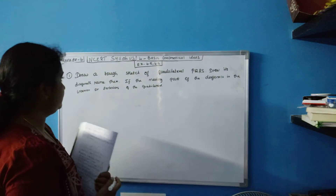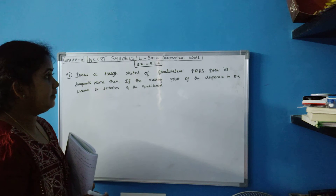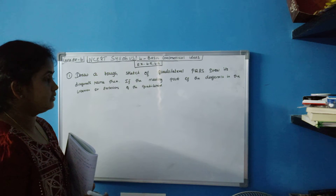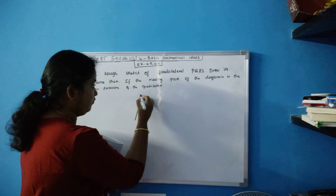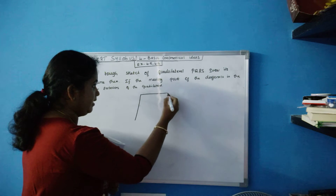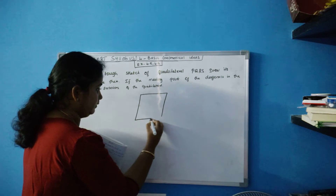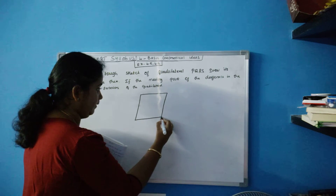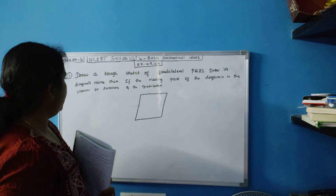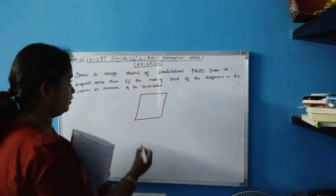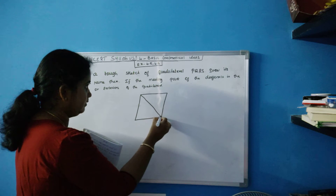So your first question is: draw a rough sketch of quadrilateral PQRS. You have to draw a rough sketch of quadrilateral PQRS. I have drawn a rough sketch. Now draw its diagonals — you have to draw the diagonals.